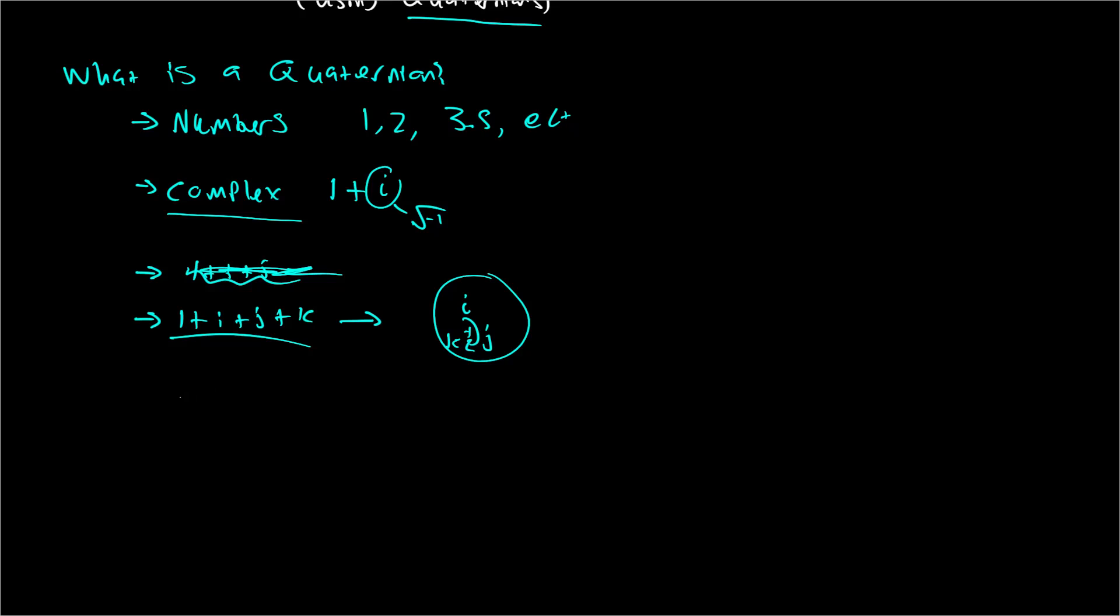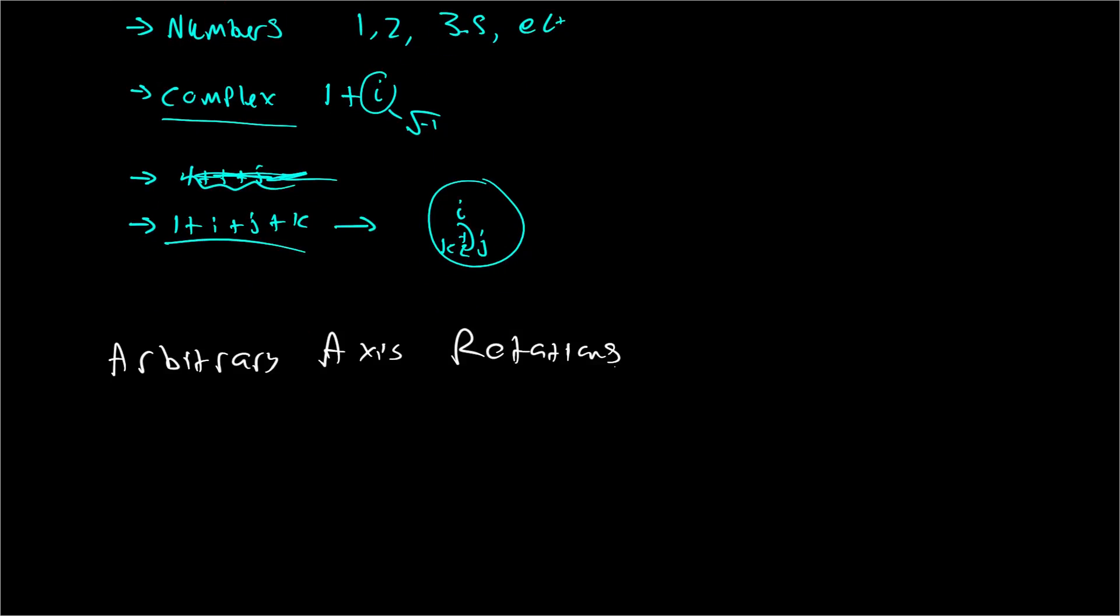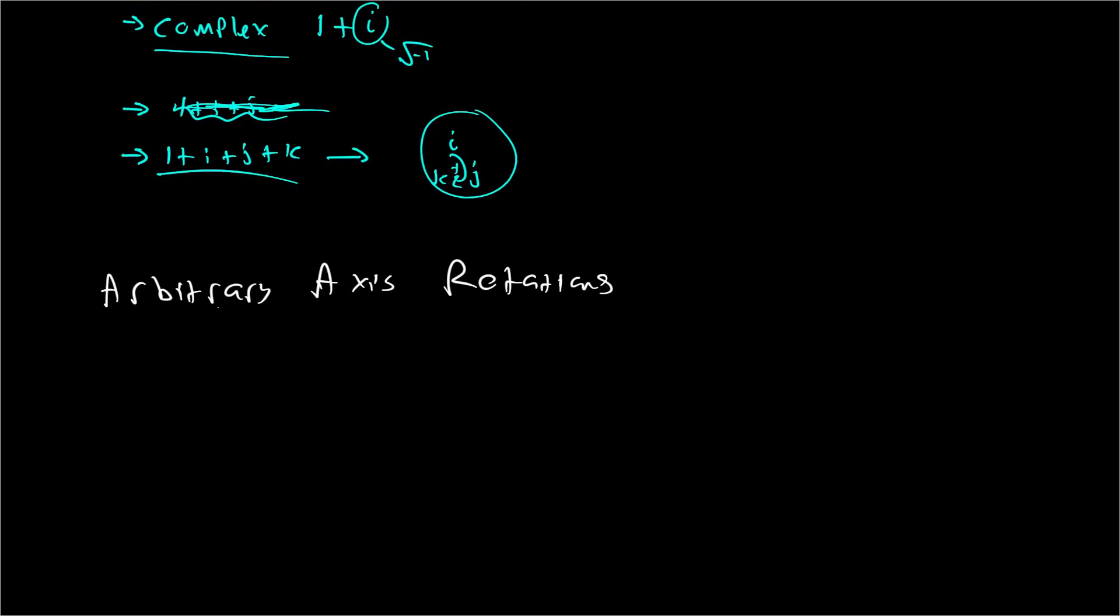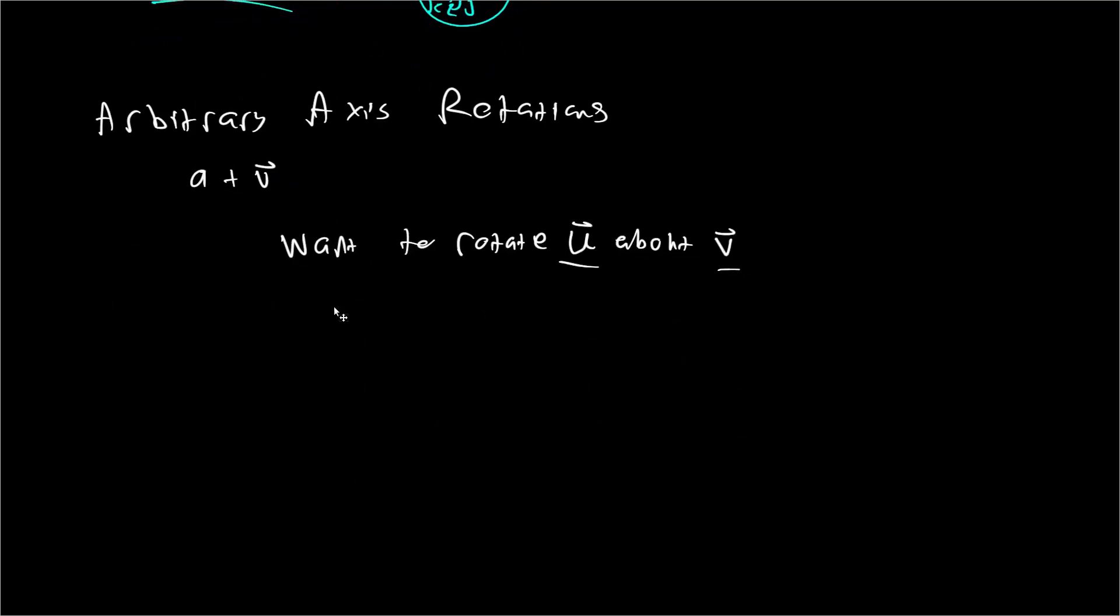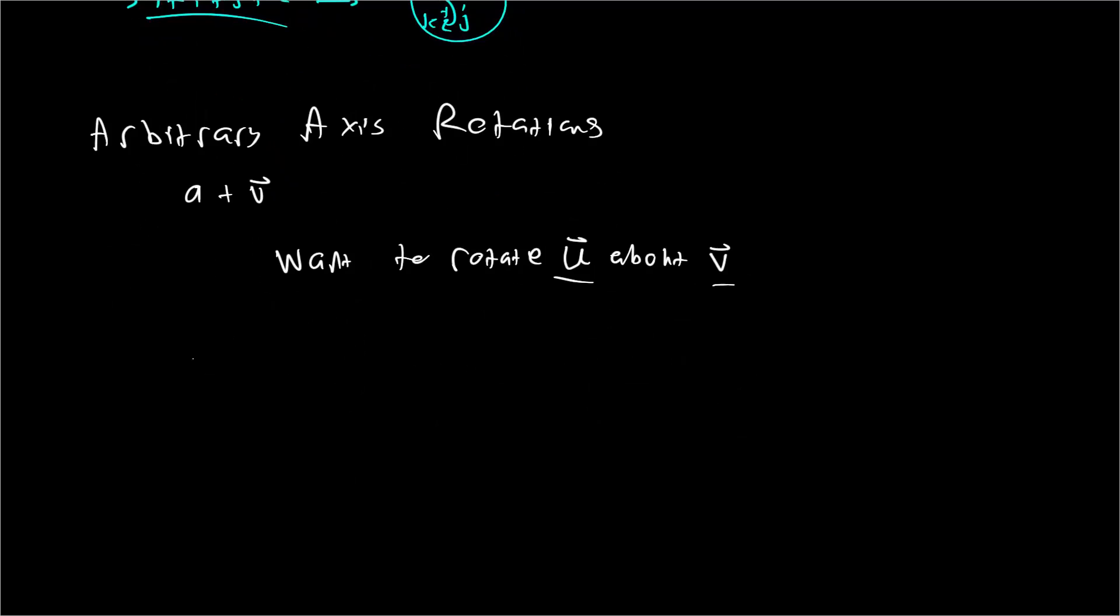Now let's take a look at rotations about an arbitrary axis. Rotations about an arbitrary axis are going to be very interesting using quaternions, because it's not a single multiplication. You have to actually do two multiplications in order to do this. Now the way that quaternions tend to be displayed is you'll have a plus v, v being a vector, a being a scalar. And so when you do quaternion rotations, you're going to have some vector that you want to rotate. Let's say we want to rotate vector u about vector v.